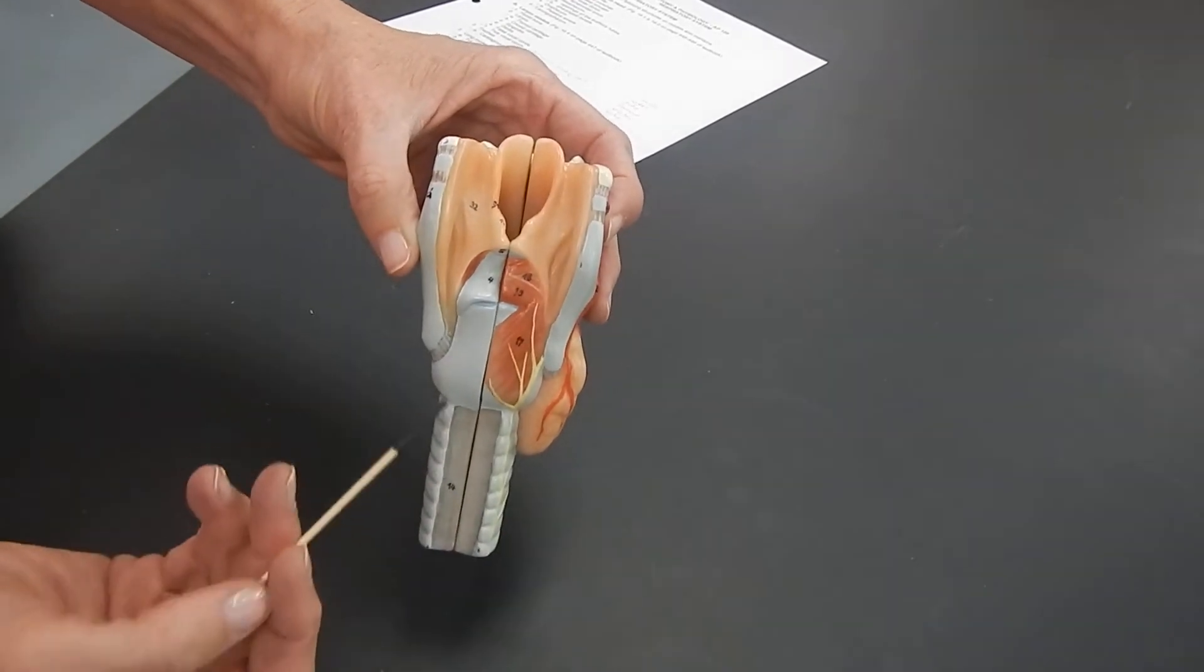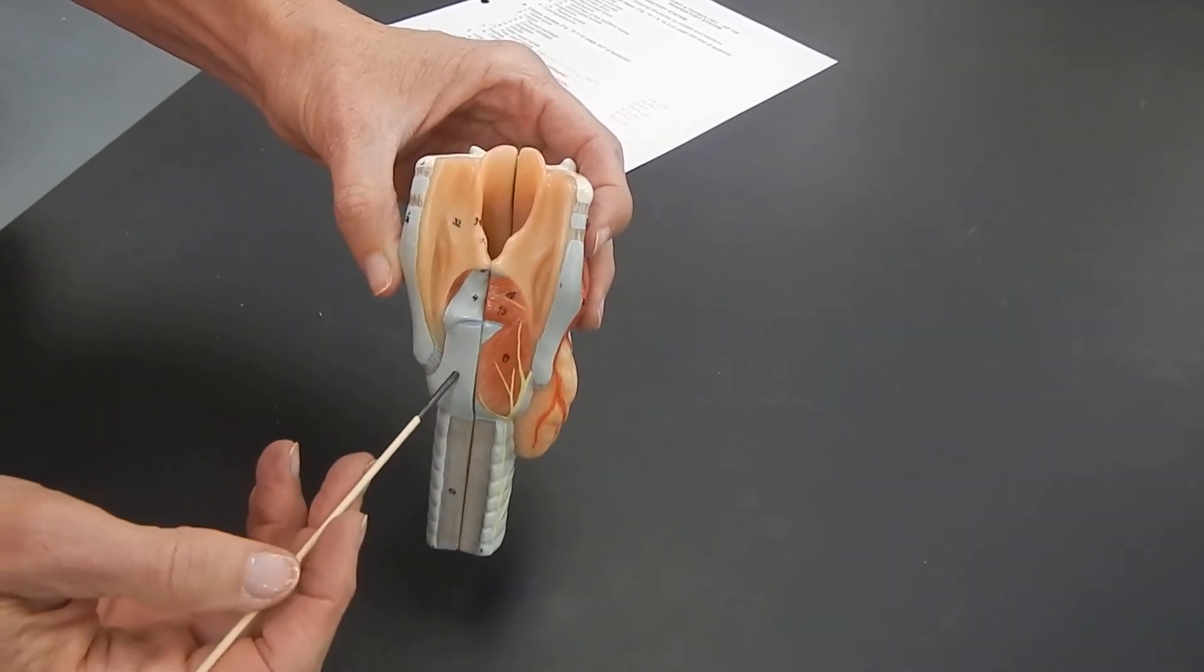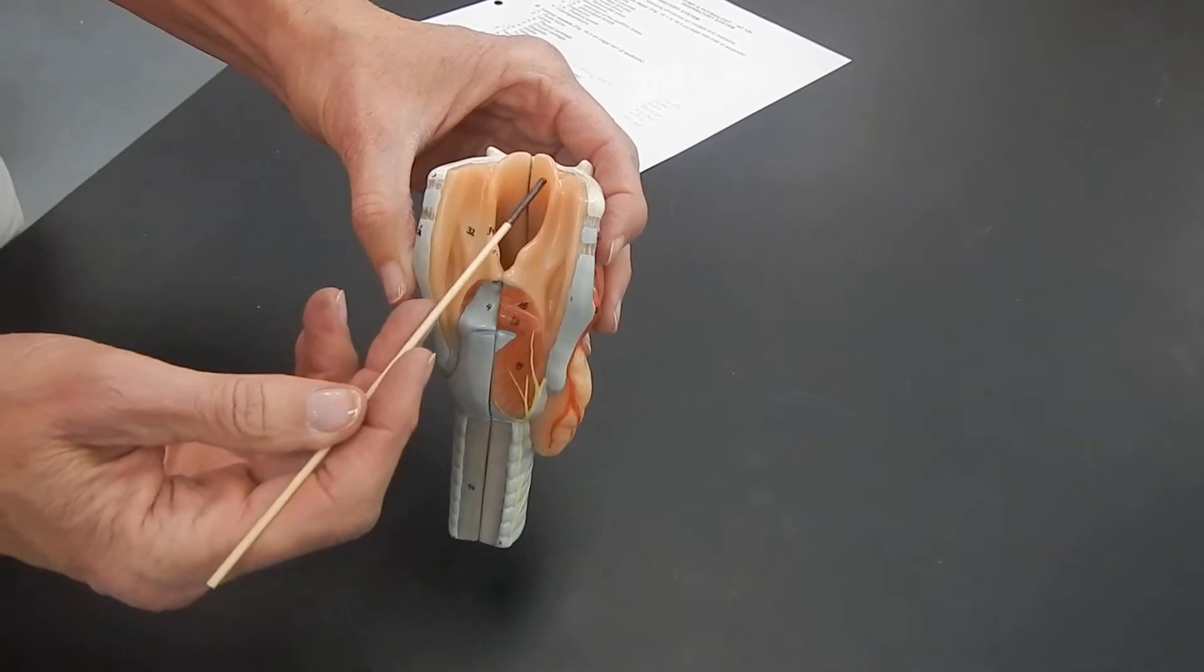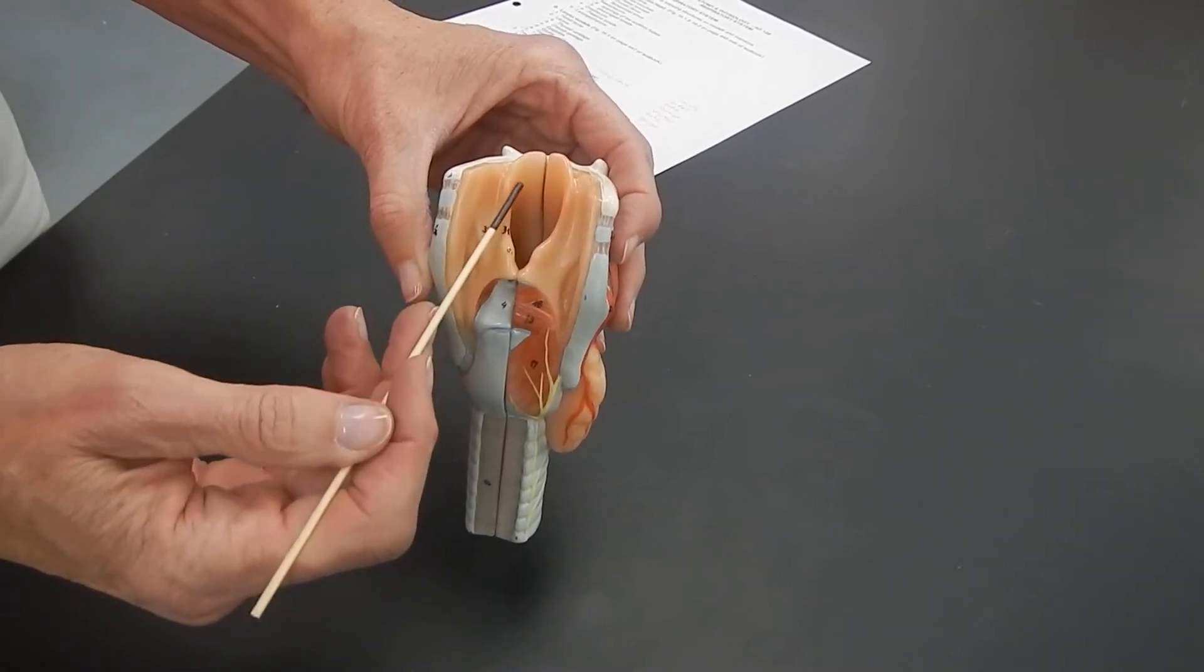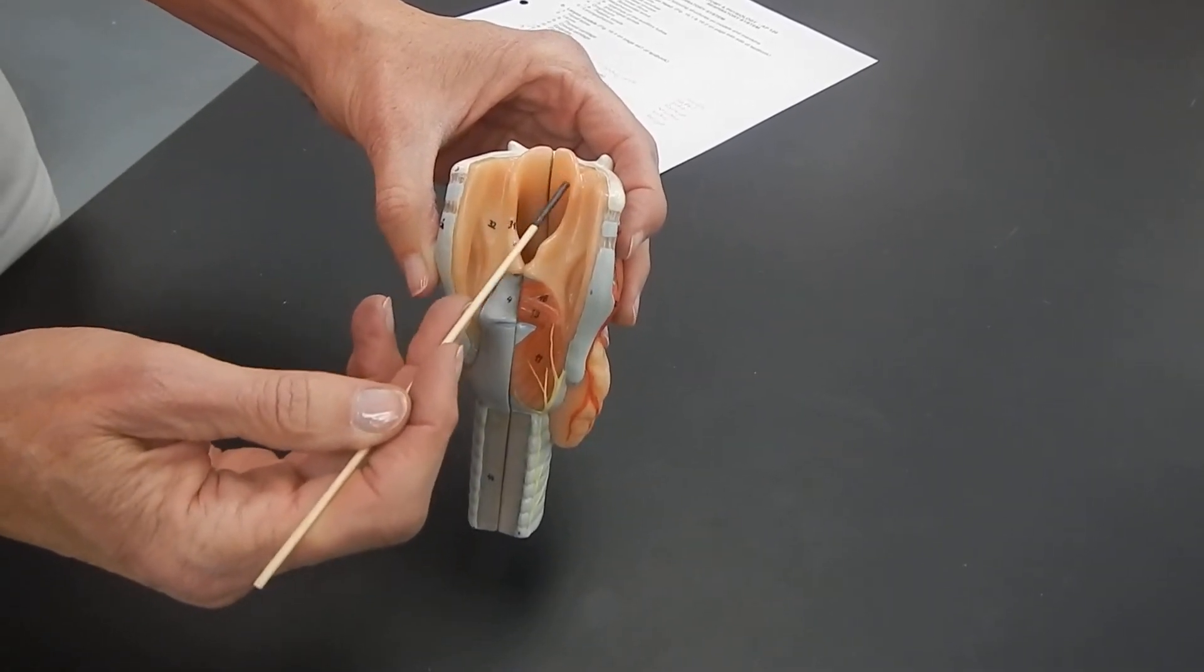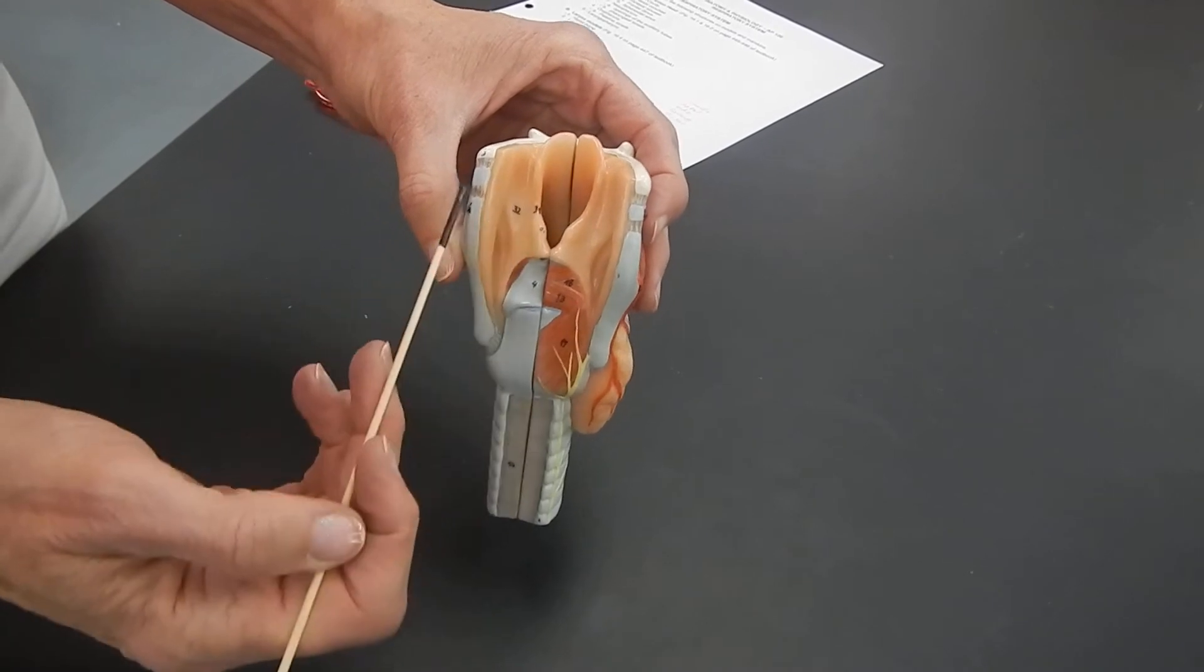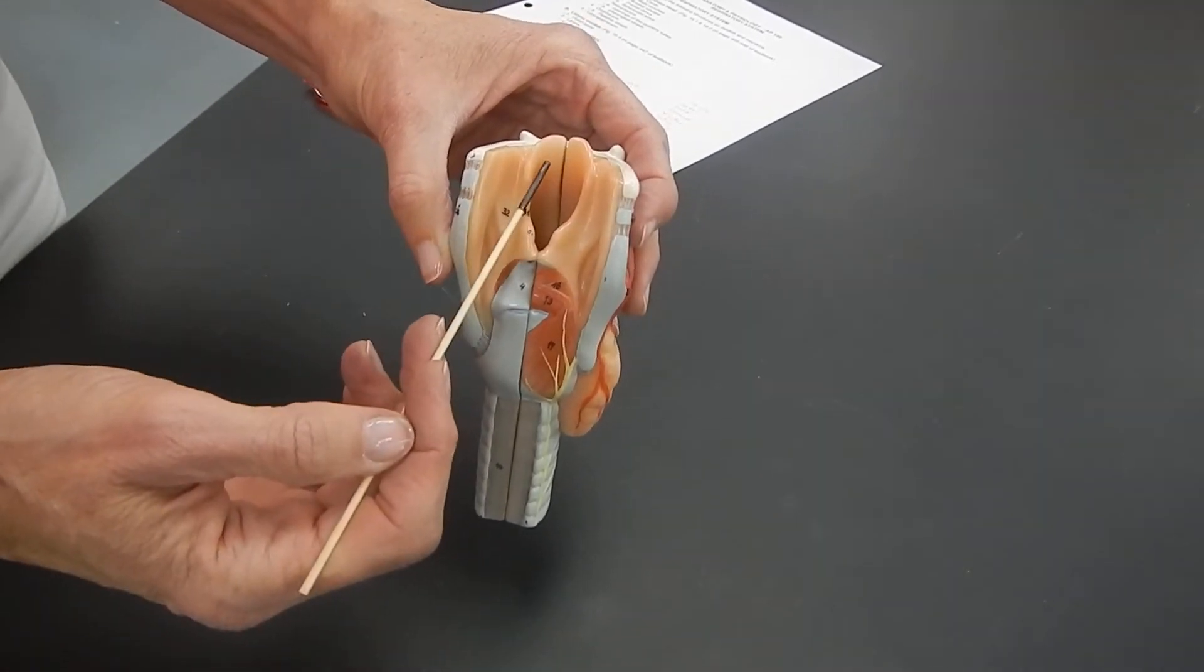Now that we're looking at the posterior aspect of the larynx, you can see this structure, which is called the epiglottis. In this model, the epiglottis, the cartilage of the epiglottis, is still covered by the tissue.